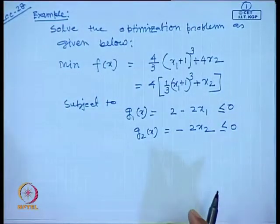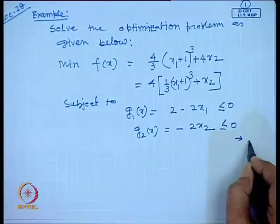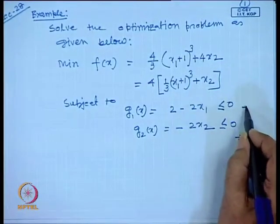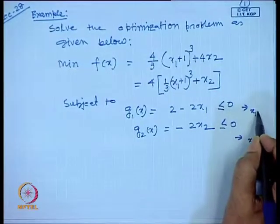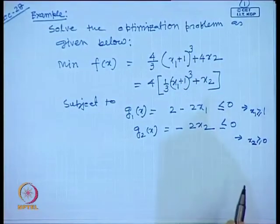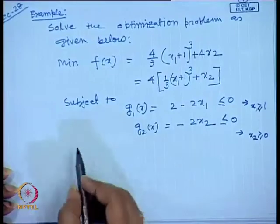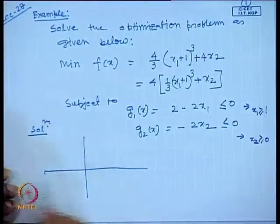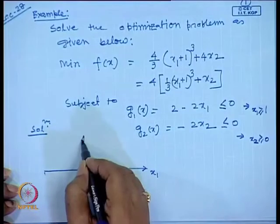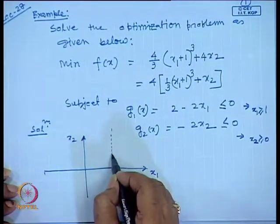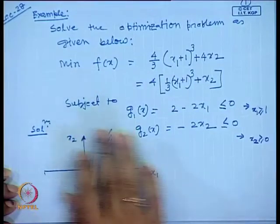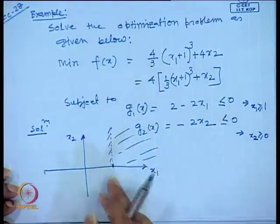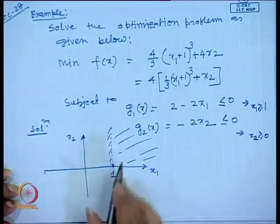From the constraint equations, we can say x2 ≥ 0 and x1 ≥ 1. This defines the feasible region. If you plot this with x1 on one axis and x2 on the other, the feasible region is where x2 is greater than 0 and x1 is greater than or equal to 1.